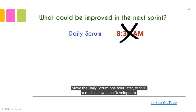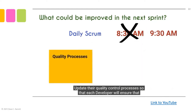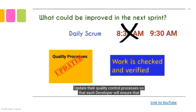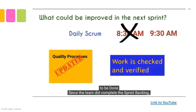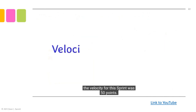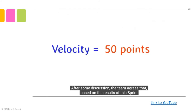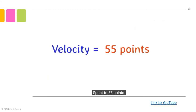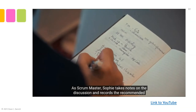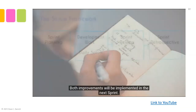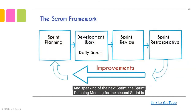Based on the discussion, the team resolved to: move the daily scrum one hour later to 9:30 a.m. to allow each developer to resolve issues from the previous day before the meeting; and update quality control processes so that each developer's work is checked and verified by another developer before it is considered done. Since the team completed the sprint backlog, the velocity for this sprint was 50 points. After discussion, the team agrees to increase the next sprint to 55 points based on this sprint's results and the process improvements identified. Sophie takes notes and records the recommended improvements, which will both be implemented in the next sprint.